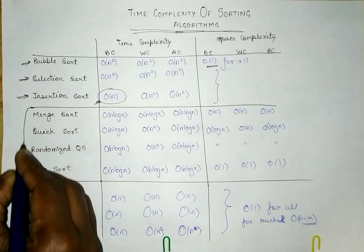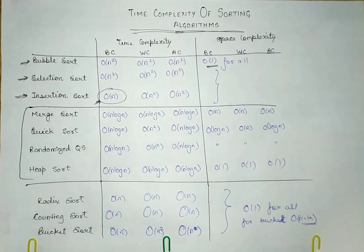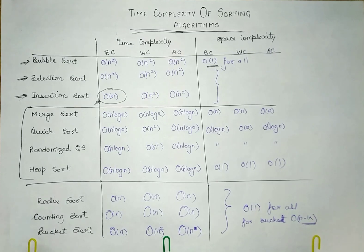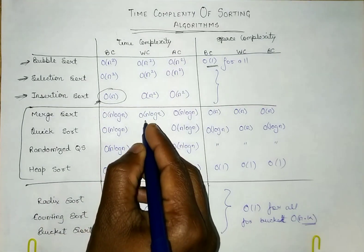The next thing is this form: merge sort, quick sort, randomized quick sort, and heap sort. Here you can see that the time complexity is order of n log n for all of these things, but for quick sort...